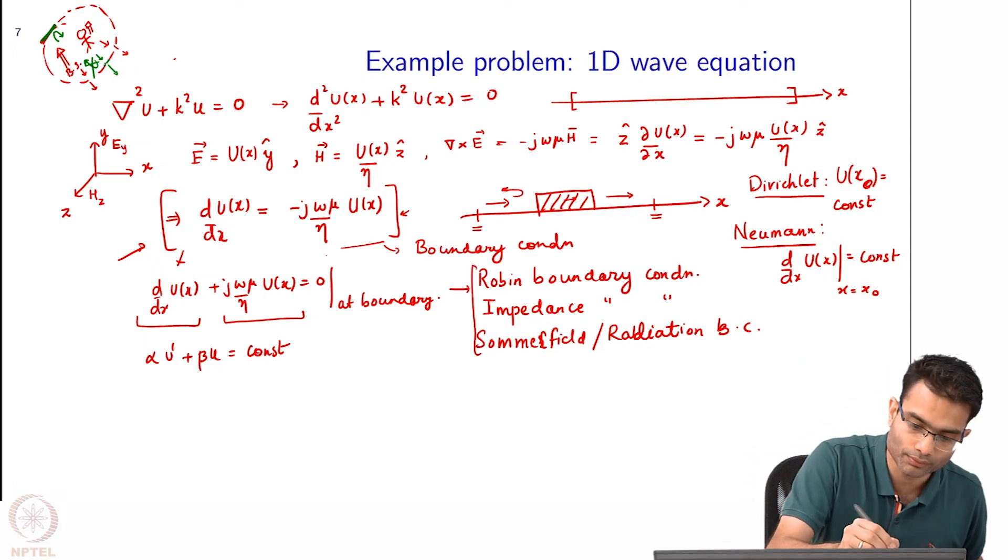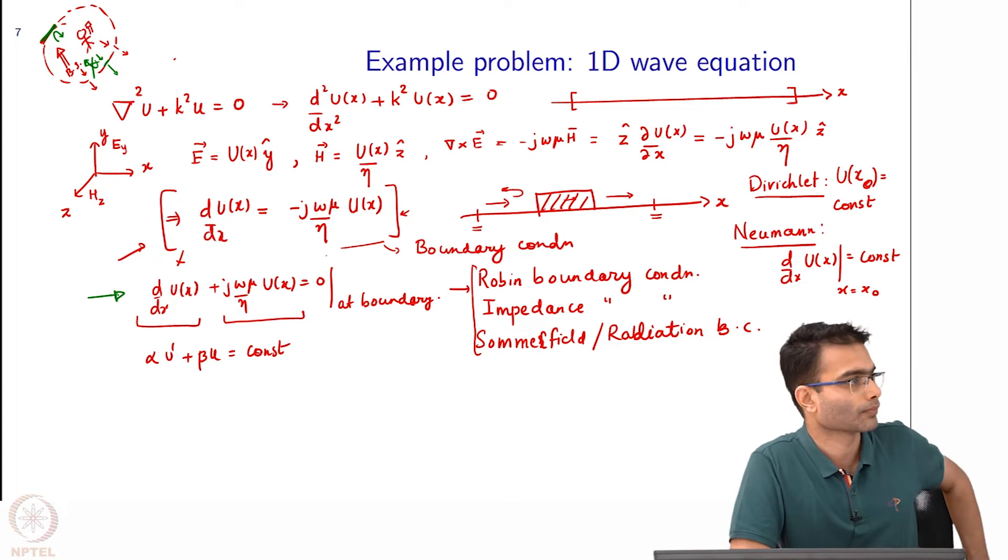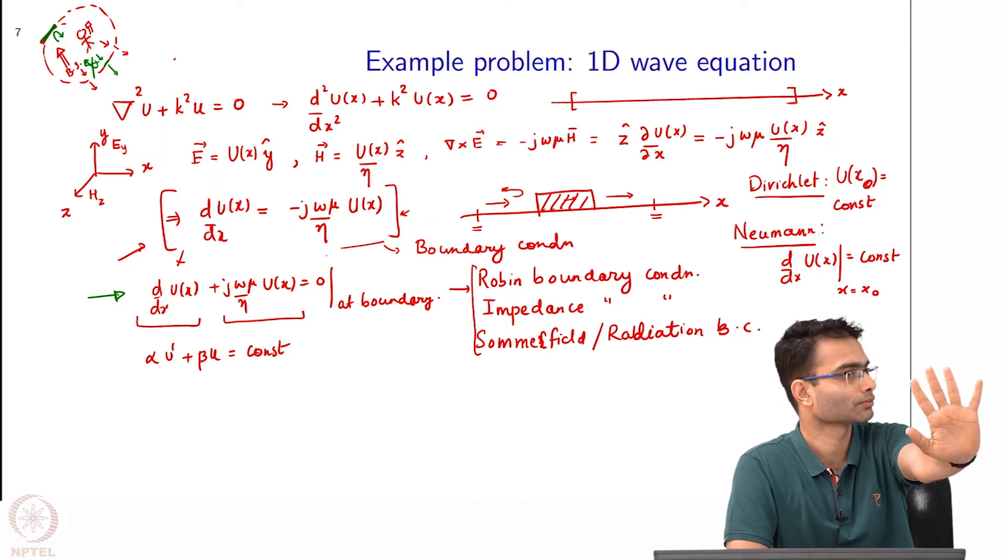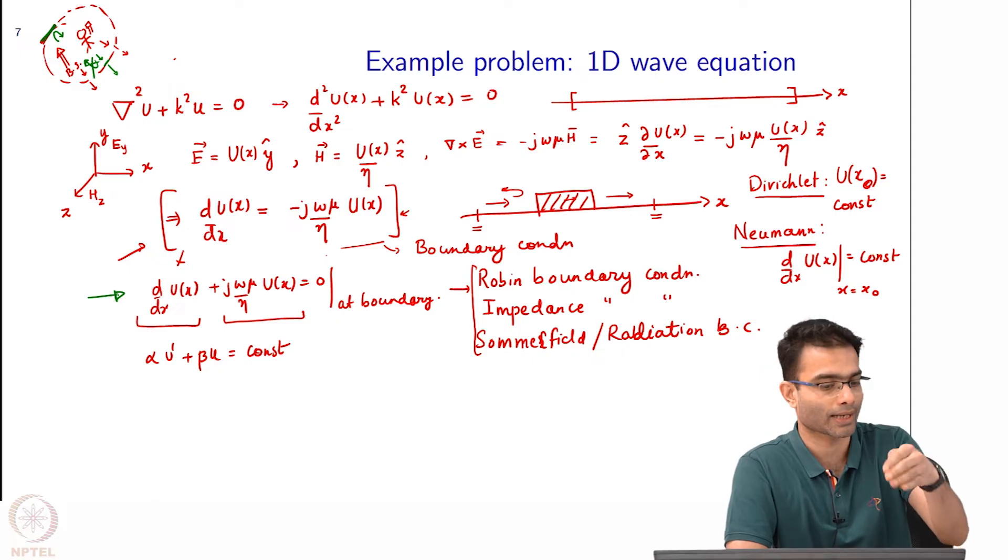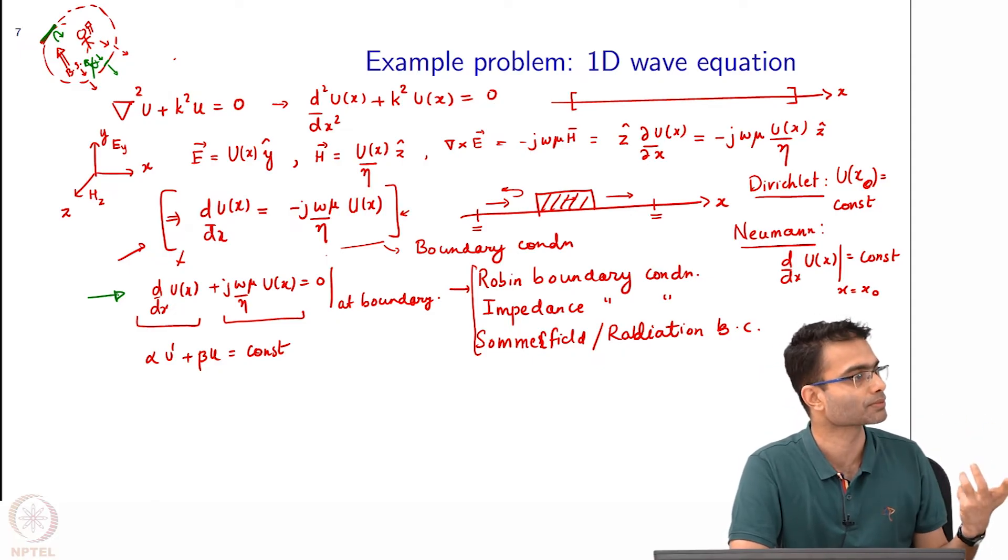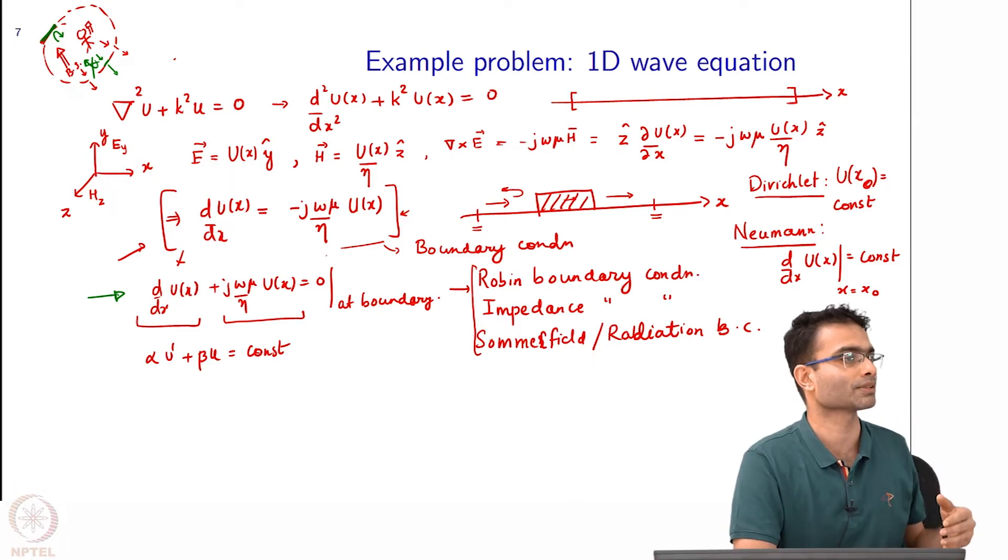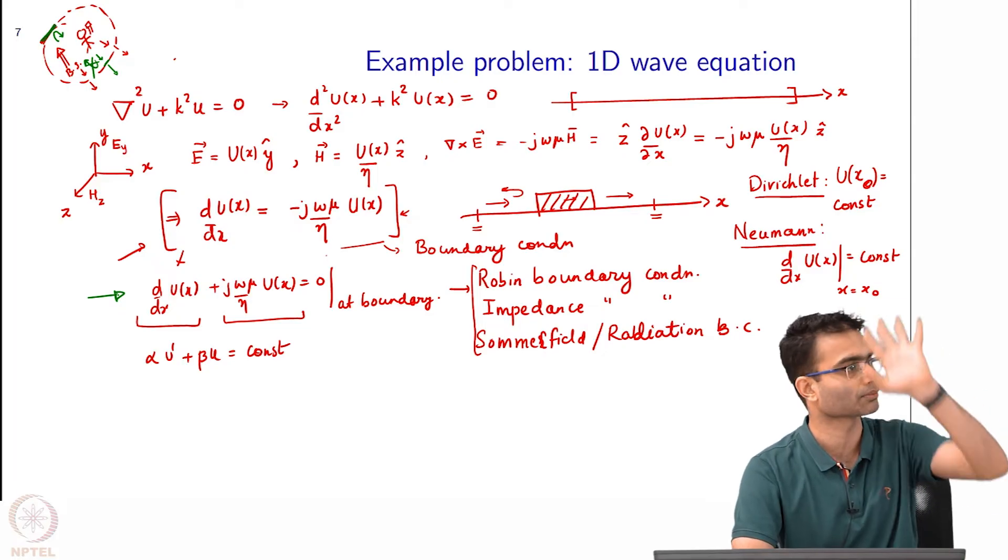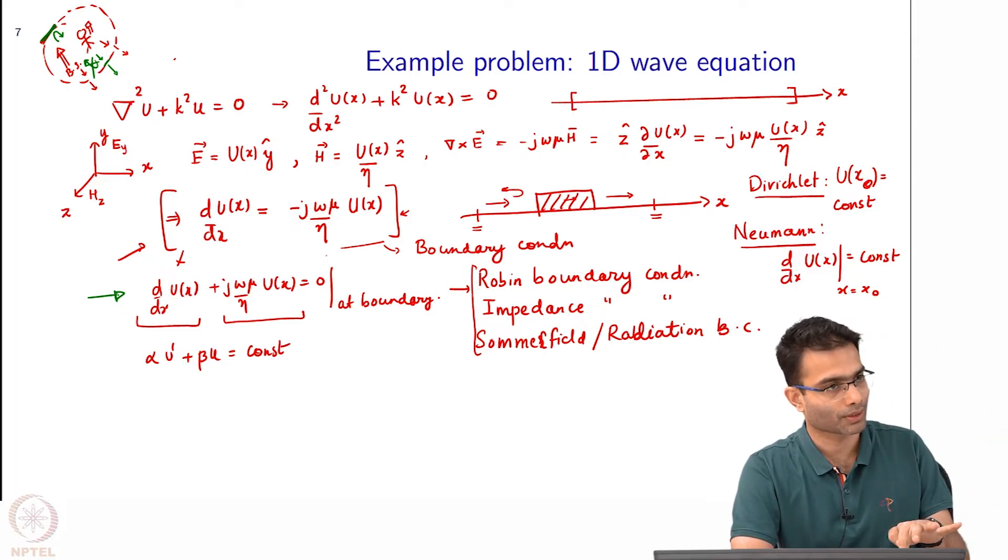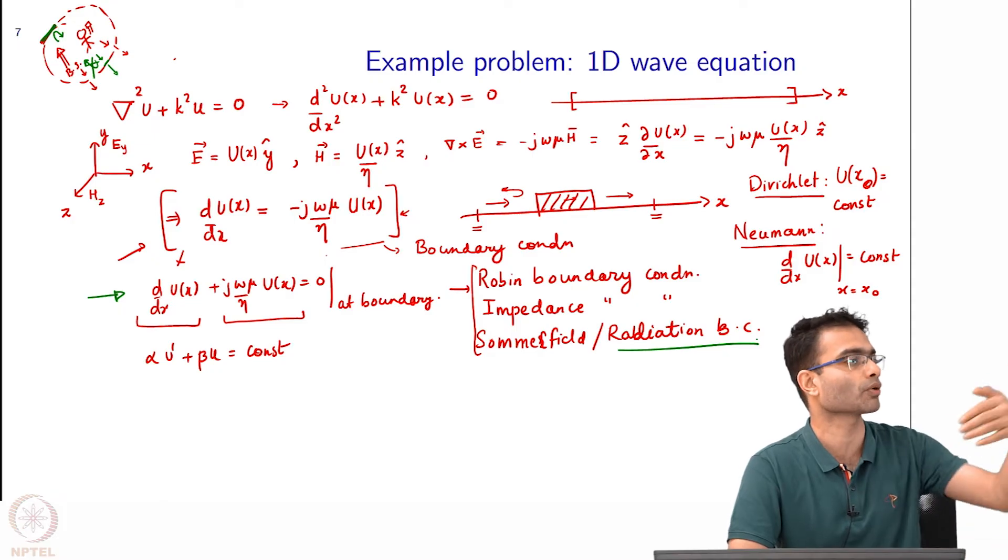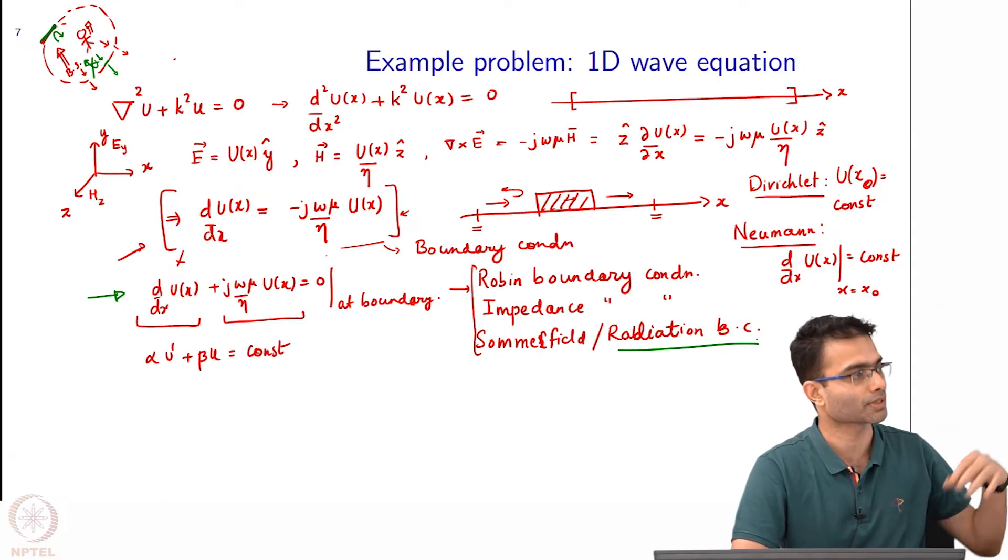At this boundary over here, if I impose this condition, what is it recreating in some sense? This is the condition that is obeyed by a wave travelling unhindered, unobstructed. If I am able to impose this condition at that interface, it will try to recreate the same situation that the field is - because it looks at this it says yeah the field is supposed to go on, because that is the equation obeyed by a plane wave that is travelling unbound. That is why the name radiation boundary condition has come from the scattering people.